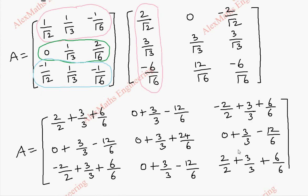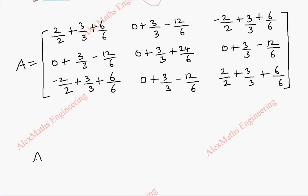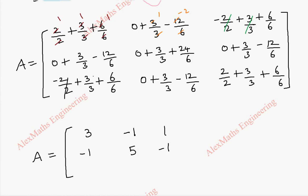Now, we are going to simplify. We can cancel terms: 2/2 is 1, 3/3 is 1, 6/6 is 1 — so totally the first element is 3. For the second element: 1 minus 2 gives minus 1. Similarly, minus 1 plus 1 cancels leaving 1. Then 1 minus 2 is minus 1; 1 plus 4 is 5; again 1 minus 2 is minus 1. Here minus 1 plus 1 cancels, so this is 1; 1 minus 2 is minus 1; and 1 plus 1 plus 1 is 3. This is our required matrix A.